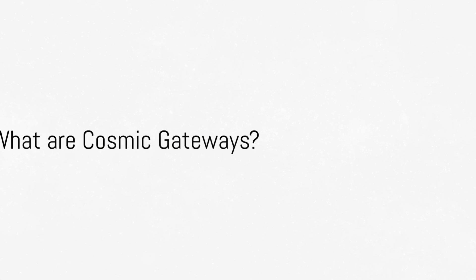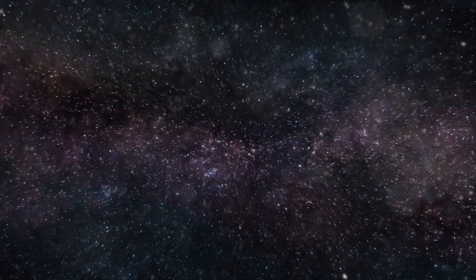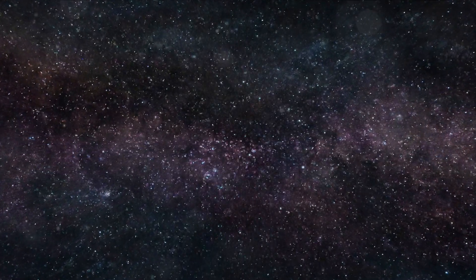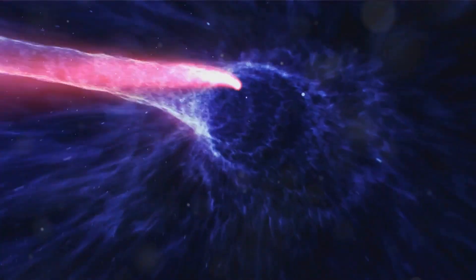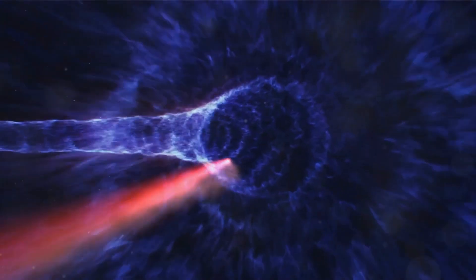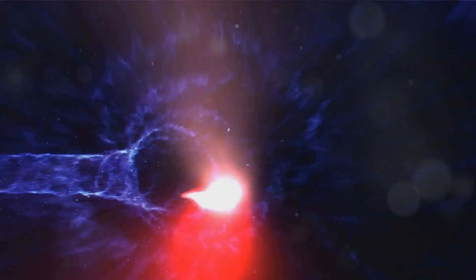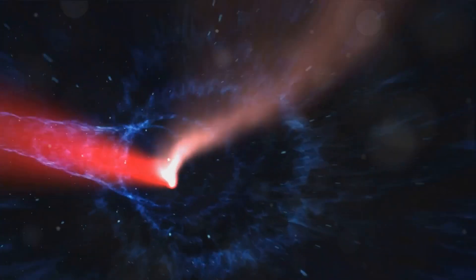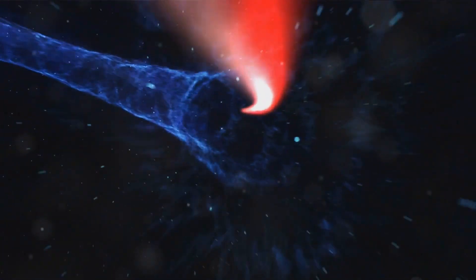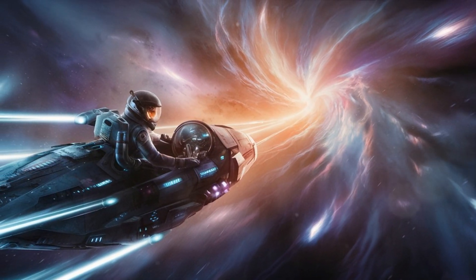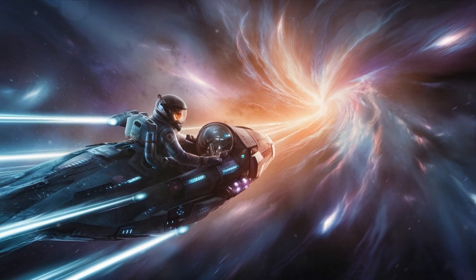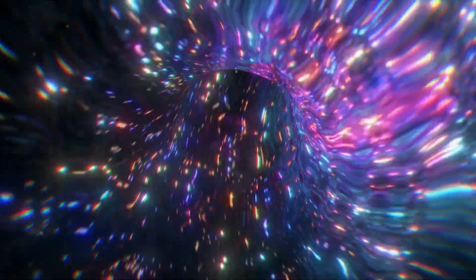Picture a tunnel in space, a cosmic gateway, connecting two distant points in the universe. Sounds like a scene from a sci-fi movie, right? But this is a concept grounded in real science. Now let's delve into the intriguing world of cosmic gateways. Imagine if you will a shortcut through time and space. Cosmic gateways, also known as Einstein-Rosen bridges, are theoretical passages through space-time that could potentially link separate regions of the universe. Picture them as a sort of cosmic shortcut, a tunnel that allows for faster-than-light travel, but how could they possibly work? To understand this, we need to revisit Einstein's theory of general relativity, which tells us that massive objects cause a distortion in space-time which we perceive as gravity.